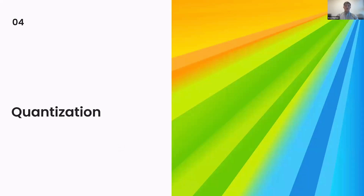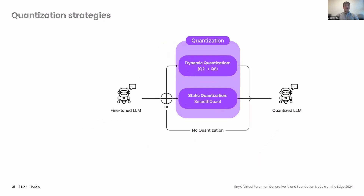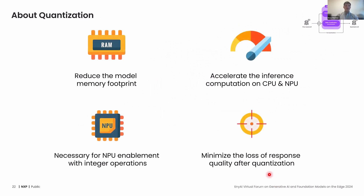The second part of the LLM is quantization. What is quantization? It's a model compression technique that converts parameter weights from a high-precision representation to a lower one. We enable two quantization strategies: dynamic quantization and static quantization. Quantization is a crucial step for LLM enablement — we need it for NPU acceleration with integer operations, while minimizing the loss in response quality after quantization.